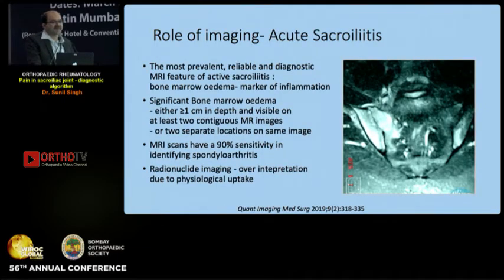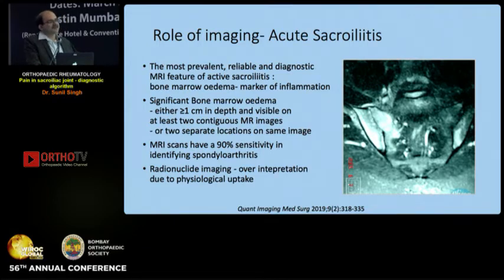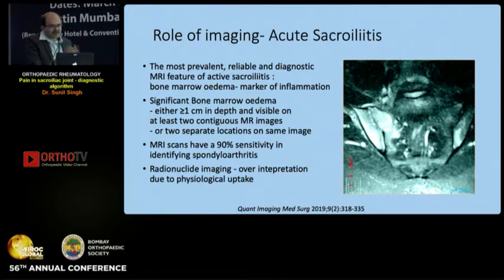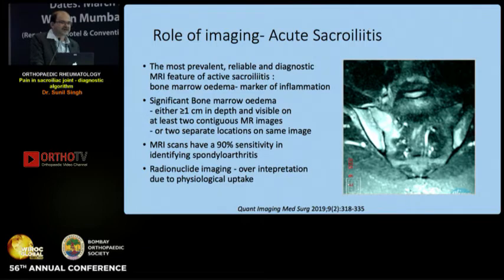In the acute setting, MRI remains the modality of choice, capable of detecting bone marrow edema — a marker of inflammation. However, marrow edema can be seen in many other situations including stress reactions, so it must be significant to label it as sacroiliitis. MRI has almost 90% sensitivity for picking up sacroiliitis in spondyloarthritis. Bone scans can lead to over-interpretation due to physiological uptake and are best avoided, or interpreted only after extensive discussion with a nuclear medicine specialist.